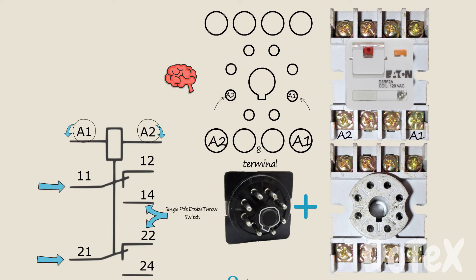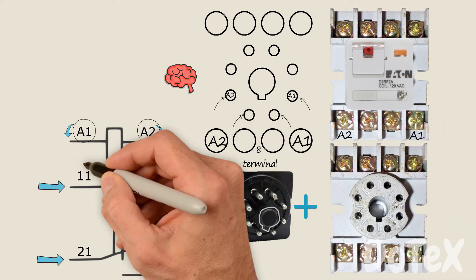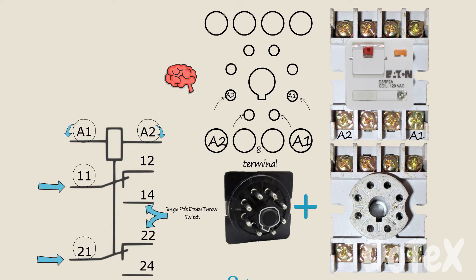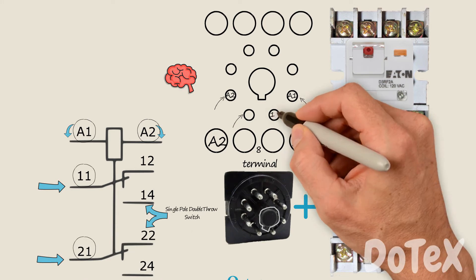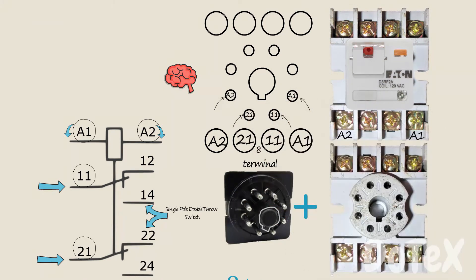Okay, the two middle terminals on the bottom of the base are the common terminals for the two independent switches, 11 and 21. Let's mark these two pins.